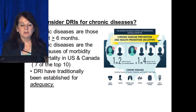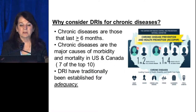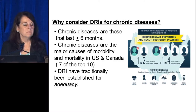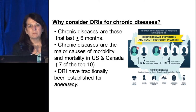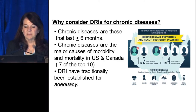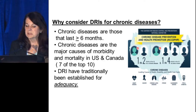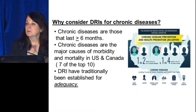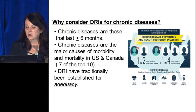The overarching question is: why should we consider DRIs for chronic disease? Chronic diseases are those that last six or more months, and they are the major causes of morbidity and mortality. Seven of the top ten causes of death are from chronic diseases. Chronic diseases affect one in two adults, and one in four adults has more than one chronic disease — things like heart disease, cancer, cardiovascular disease, type 2 diabetes, and so forth.